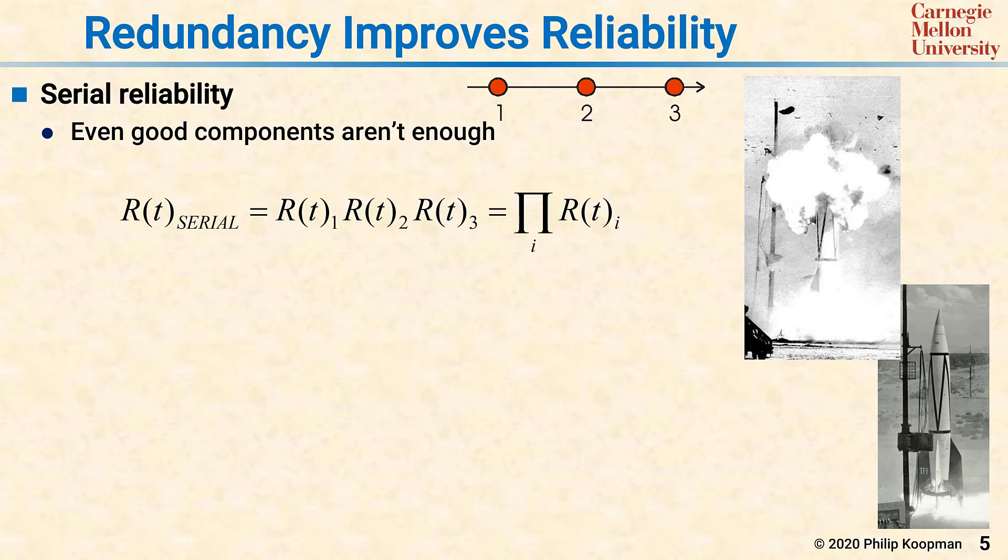So that means multiplying the reliability for all three components to get the system reliability. Reliability numbers are probabilities less than one, and when you multiply numbers less than one together, the result gets smaller instead of bigger.